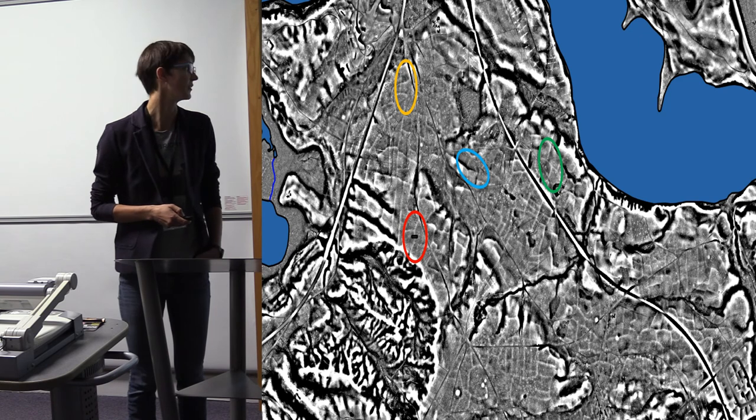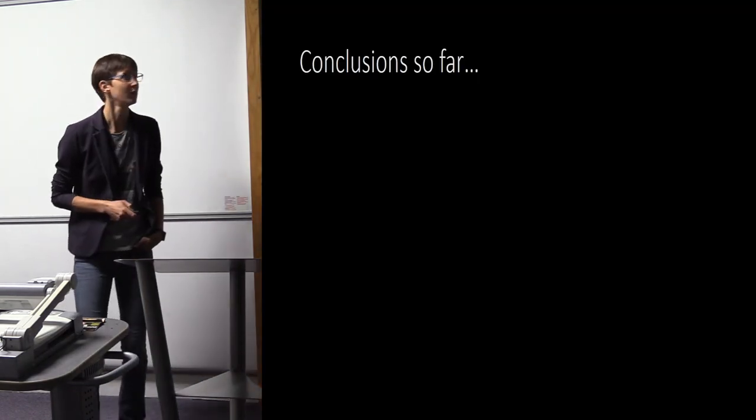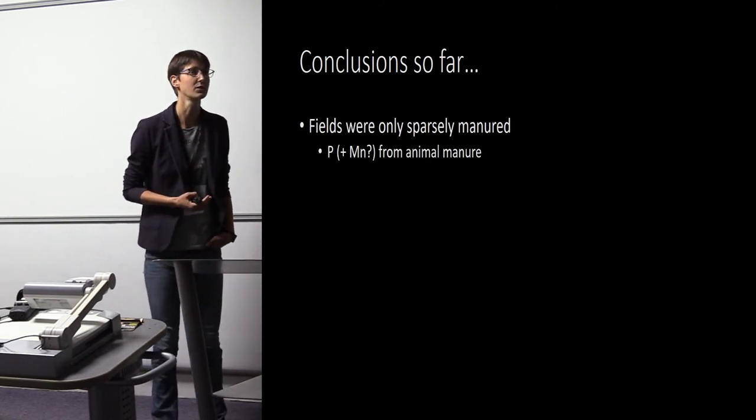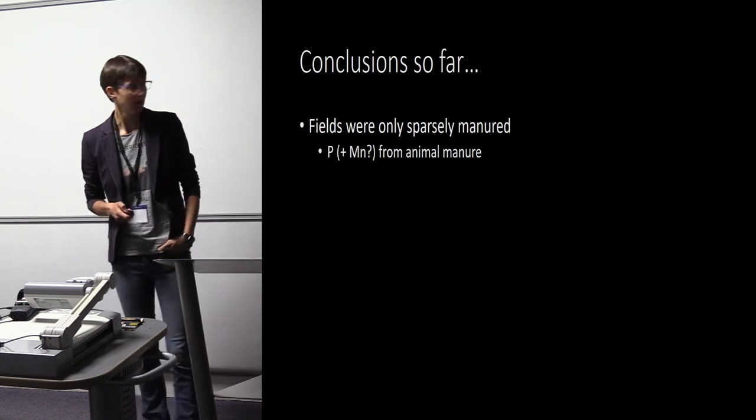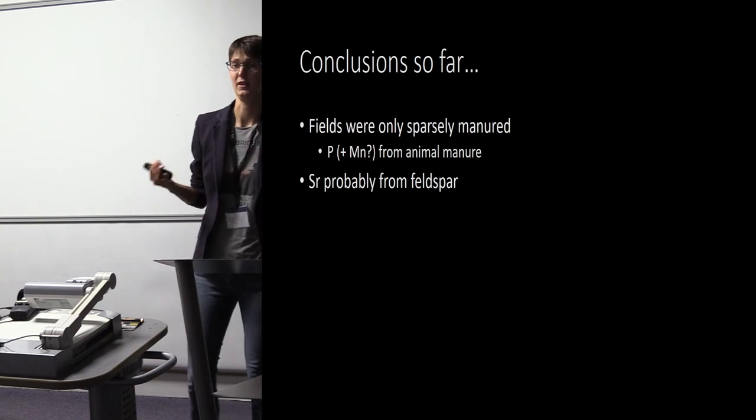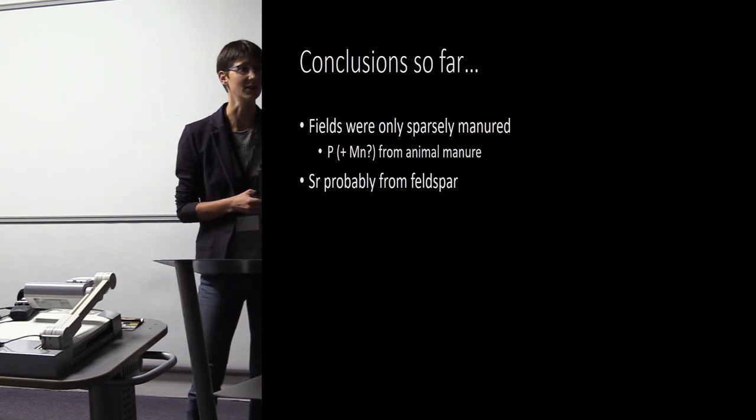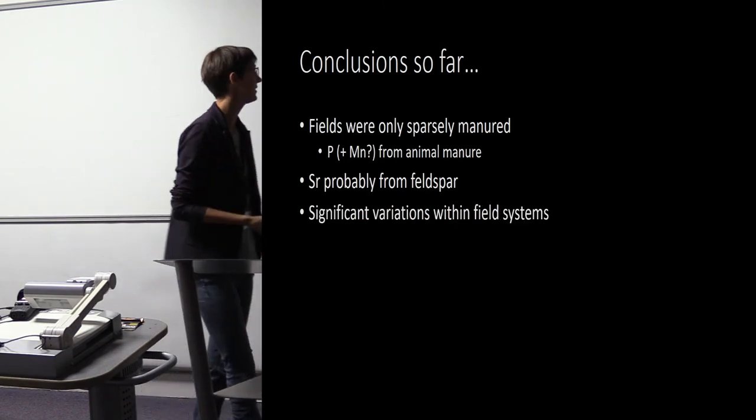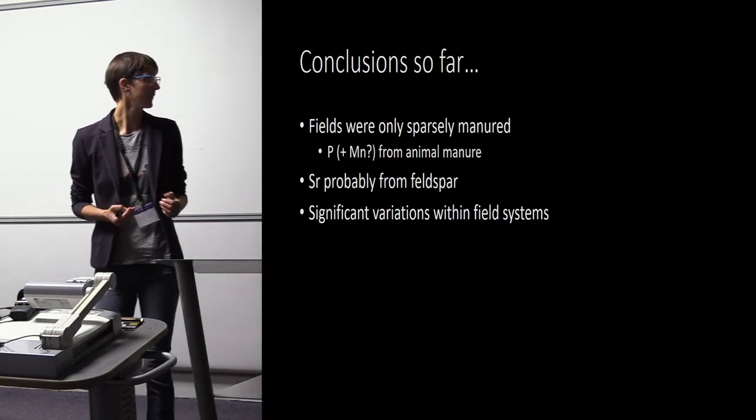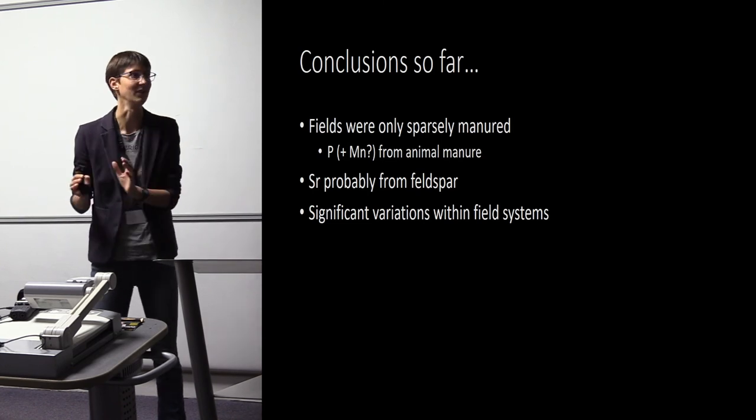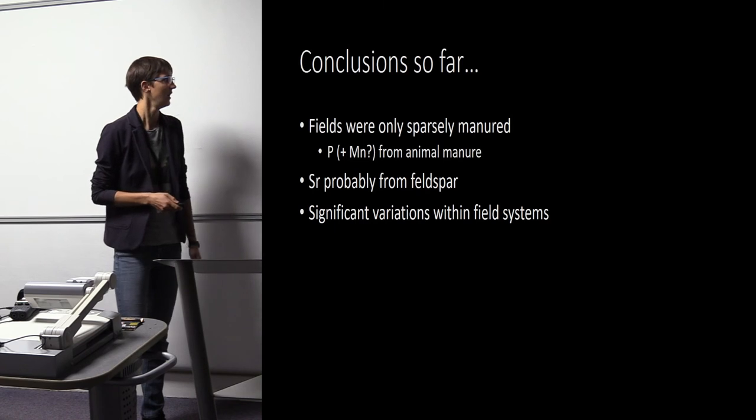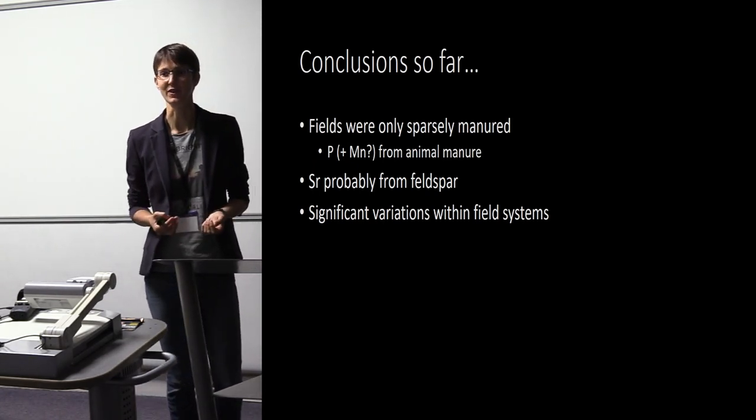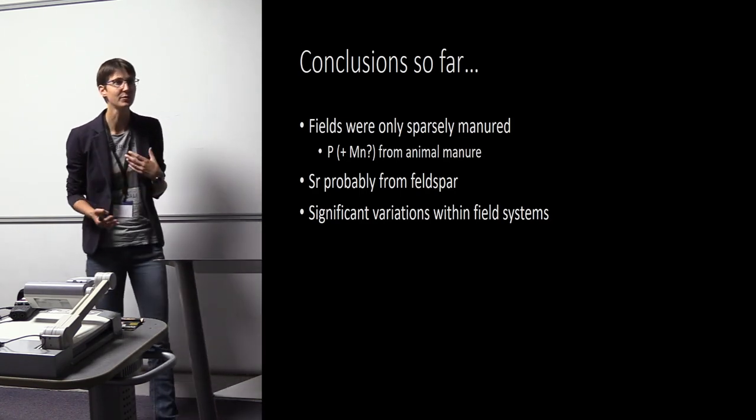Conclusions so far: fields were only sparsely manured, especially at Silkeborg Vesterskøv. Phosphorus, possibly also manganese, indicate the addition of animal manure. Strontium is not as useful in these field systems in eastern Jutland, in contrast to what we saw at Østerlemhede. We can see significant variations within the field systems. When doing a Mann-Whitney test, we could see these are statistically significant differences. This is something you have to take into account when studying field systems. You can't just take a few samples—you have this variation. Preferably you would take a lot of samples, more than we've been able to do in this project.